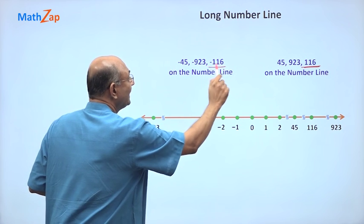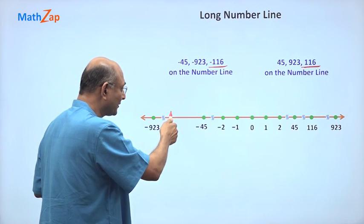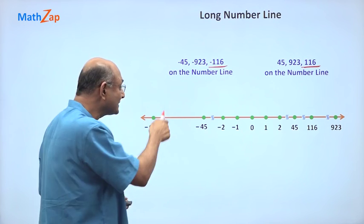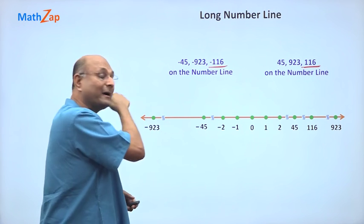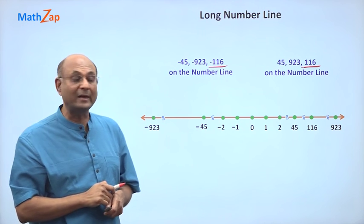What about minus 116? Minus 45, minus 46, minus 47, if you keep going you will get to minus 100, minus 116. And then if you keep continuing, minus 200, minus 300, only after that you will get minus 923.